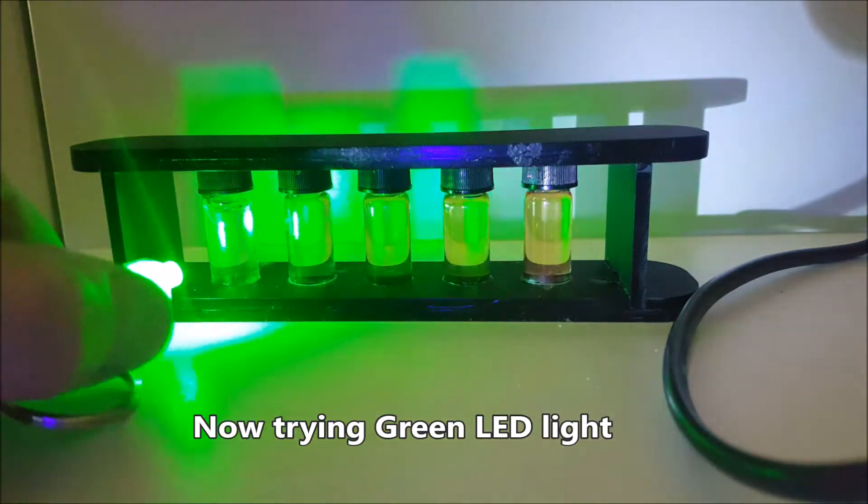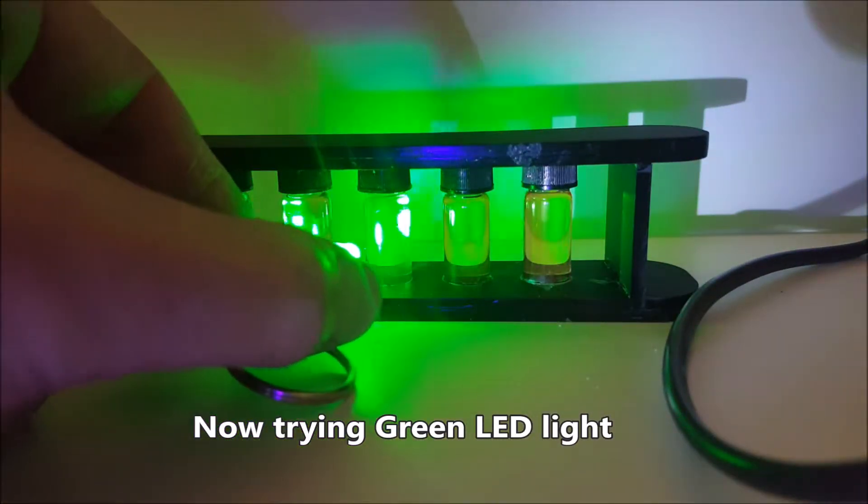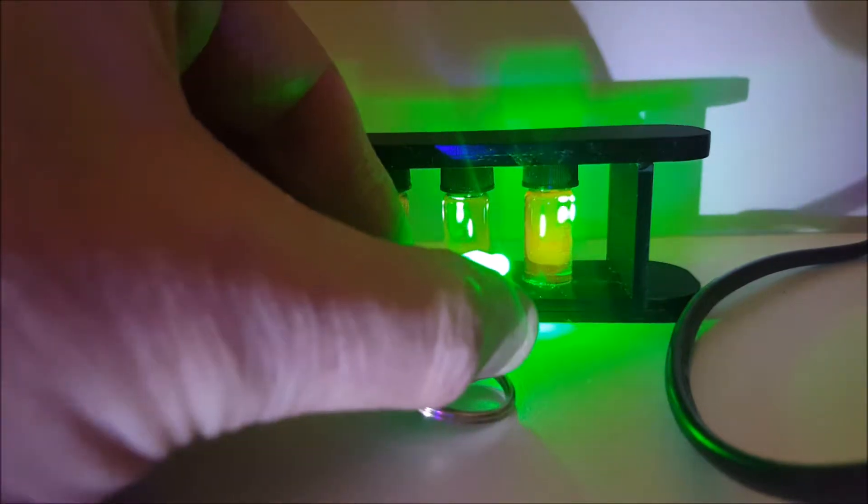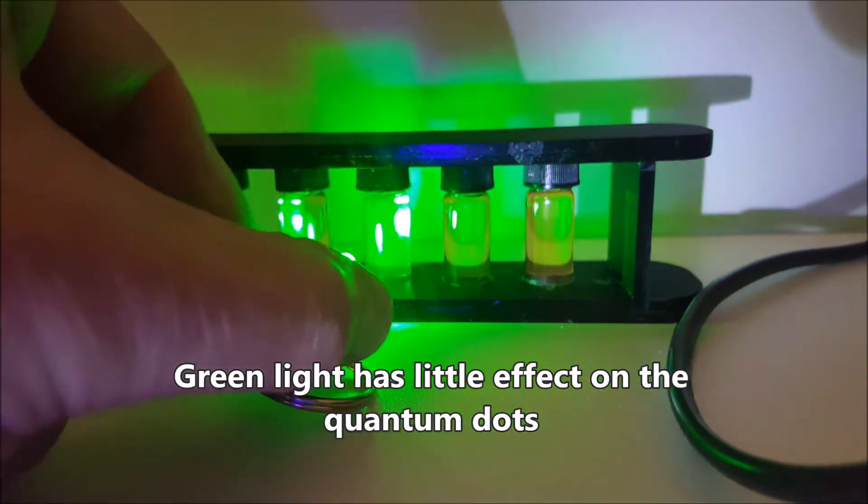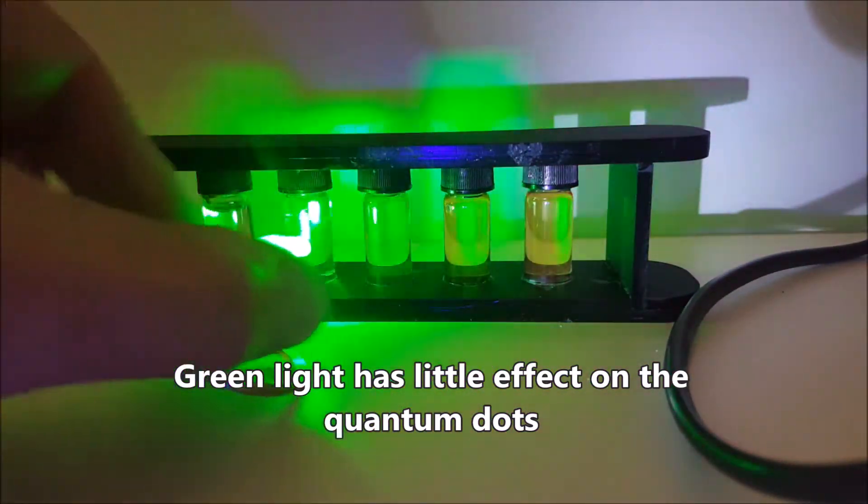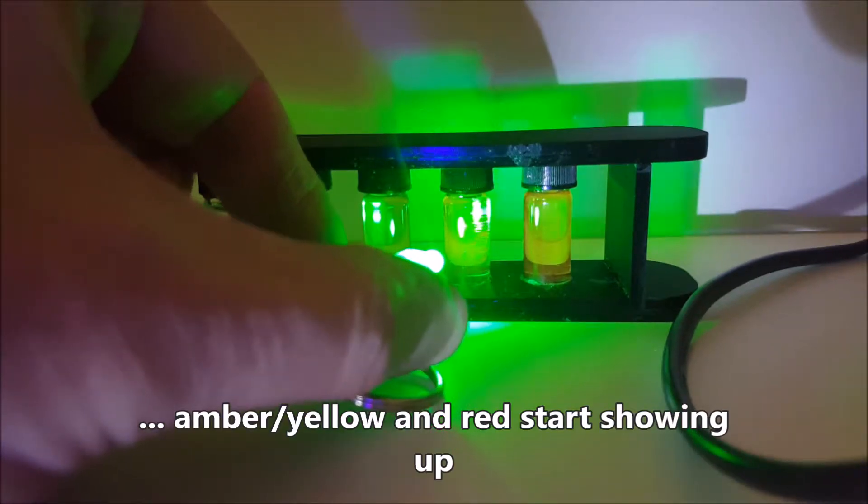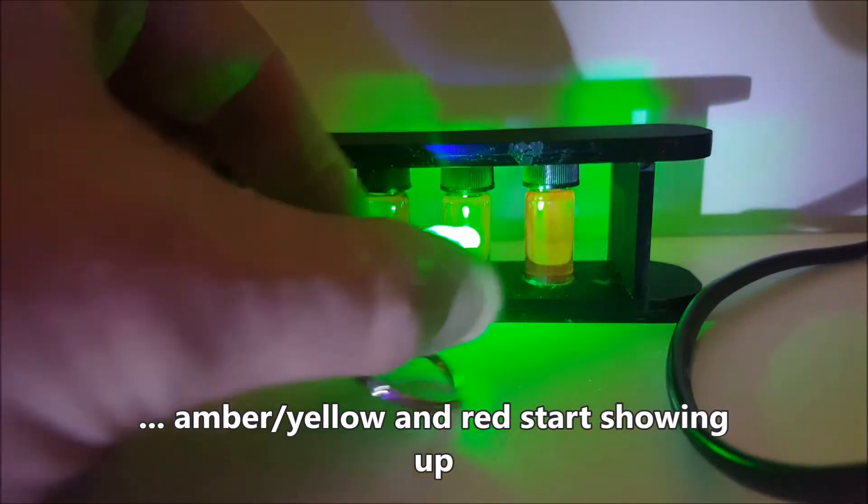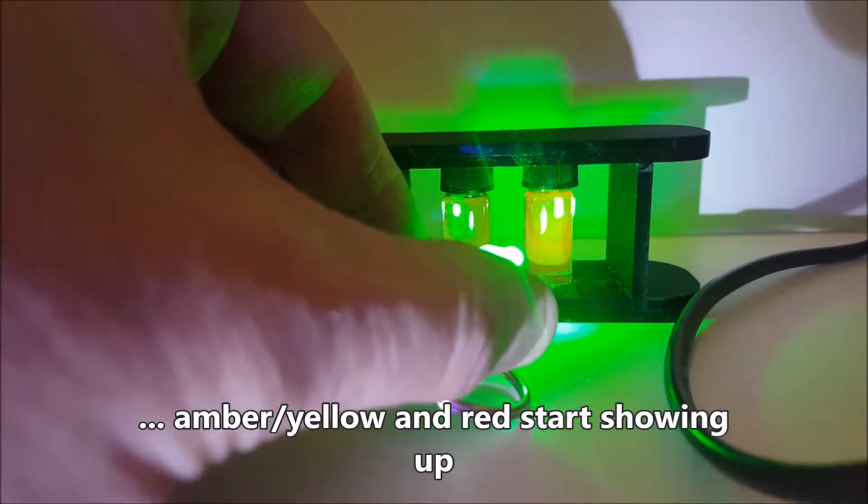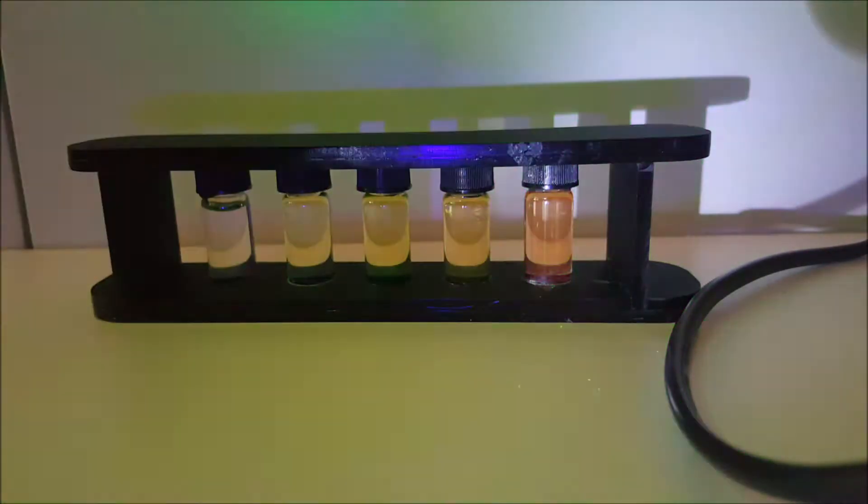Now, green. Is something happening when I shine green light on it? Yes, I can see difference. These are not effective, but I can see a kind of umber color over there, and I can see red on the right. You should also be able to see that now.